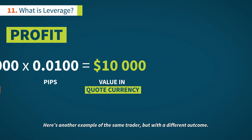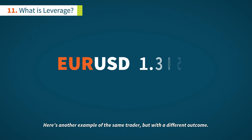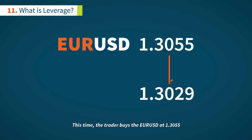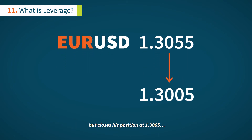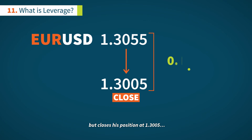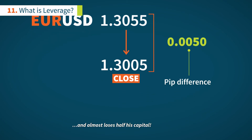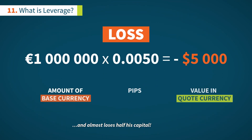Here's another example of the same trader but with a different outcome. This time, the trader buys the EURUSD at 1.355 but closes his position at 1.3005 and loses almost half his capital.